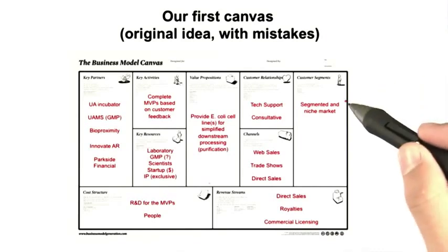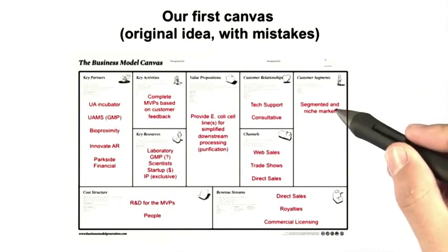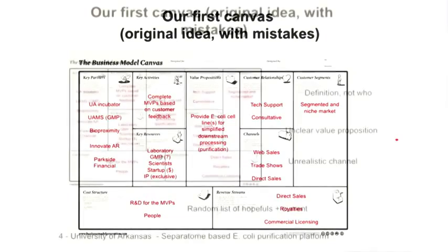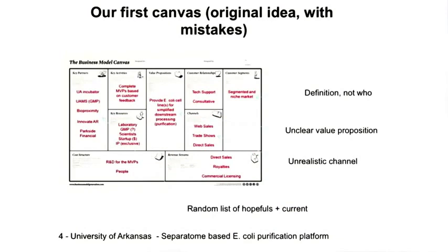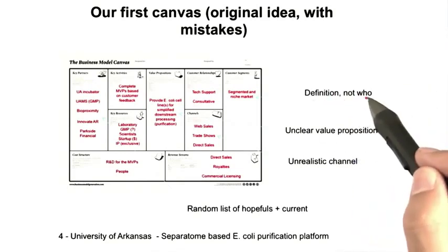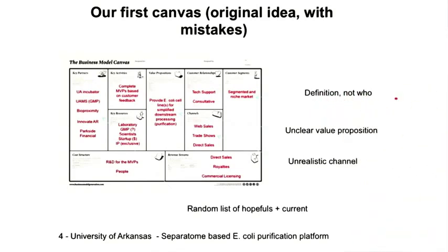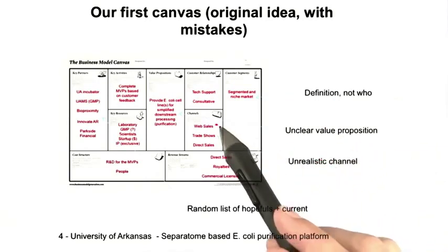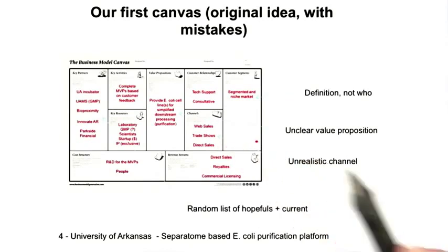They said their customer segment was 'segmented niche marketing.' In hindsight, after the end of the class, they were the ones who admitted that was really just a definition of what a customer segment was — they didn't actually describe who. Their value proposition, as even they realized later, was pretty unclear. And their channels — web sales, trade shows, and direct sales — looked pretty unrealistic in hindsight.